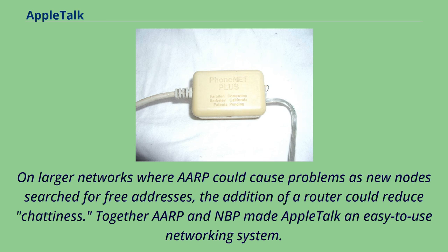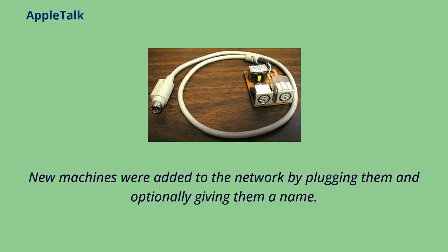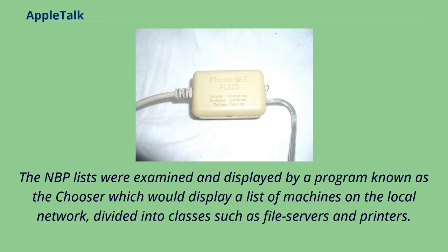New machines were added to the network by plugging them in and optionally giving them a name. The NBP lists were examined and displayed by a program known as the Chooser, which would display a list of machines on the local network divided into classes such as file servers and printers. An AppleTalk address was a 4-byte quantity consisting of a 2-byte network number, a 1-byte node number, and a 1-byte socket number.